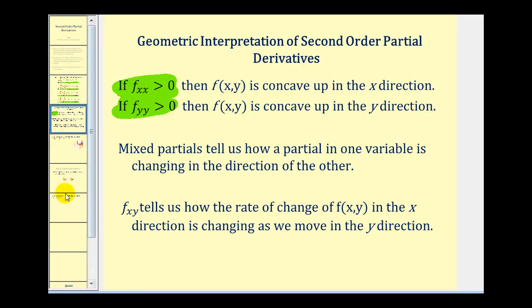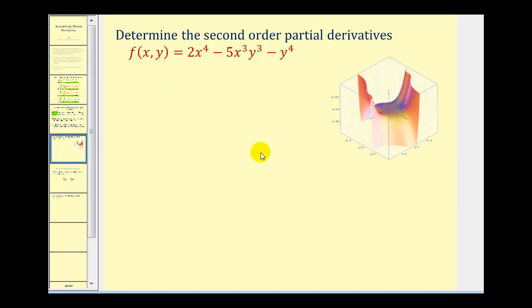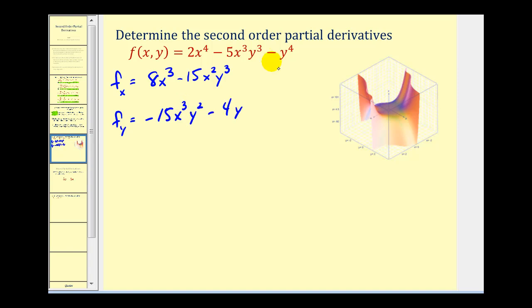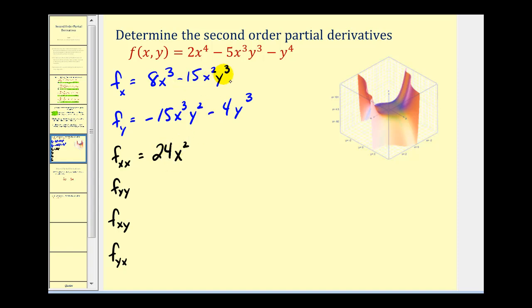Let's look at some examples to get practice finding second order partial derivatives. First we find the first order partial derivatives. The first partial with respect to x, treating y as a constant, gives us 8x³ minus 15x²y³. The first partial with respect to y gives us negative 15x³y² minus 4y³. Now we find all four second order partial derivatives. For f_xx, we differentiate the first partial again with respect to x: 24x² minus 30xy³.